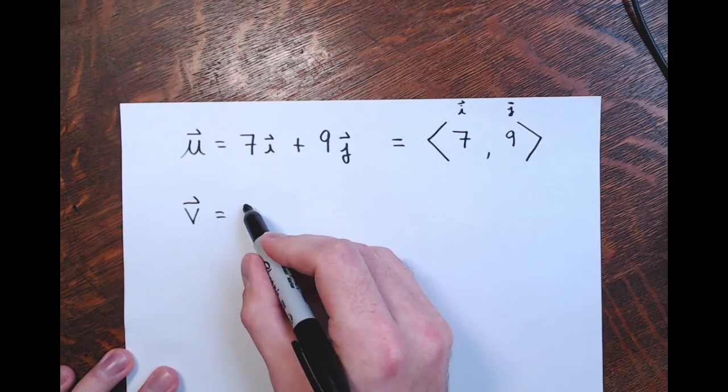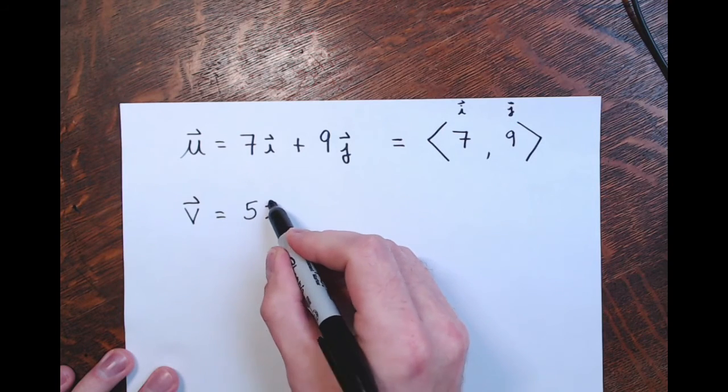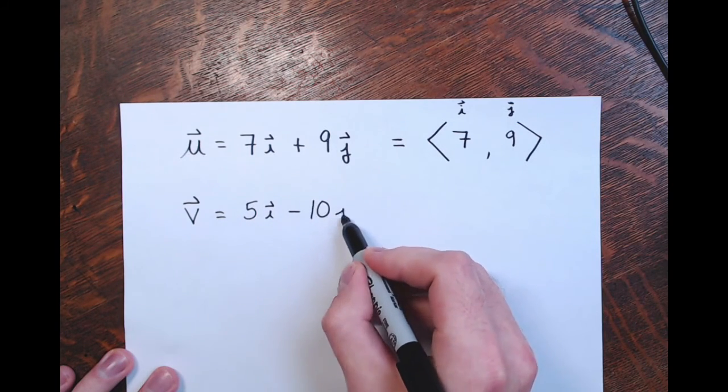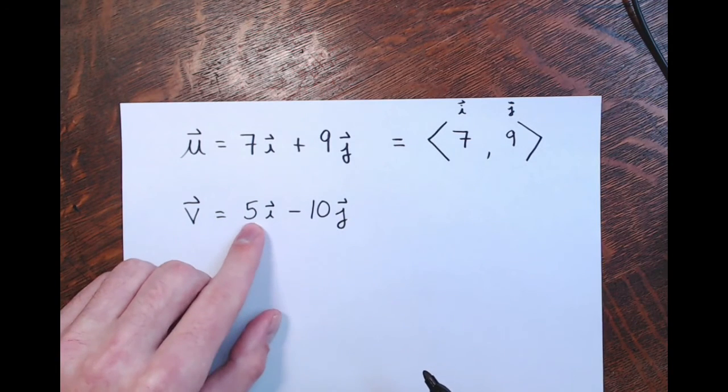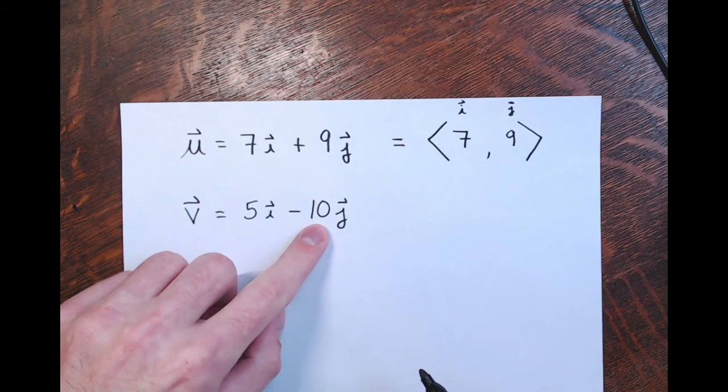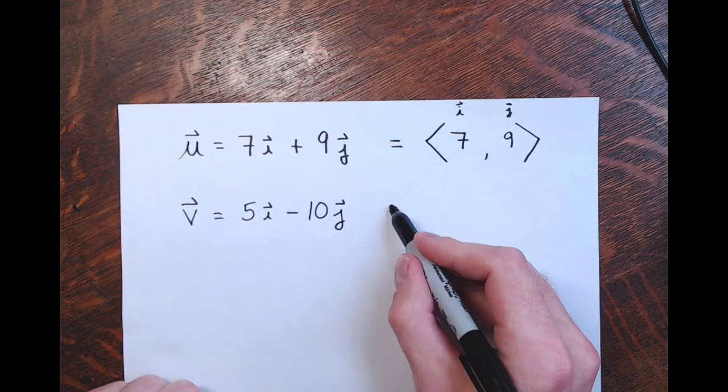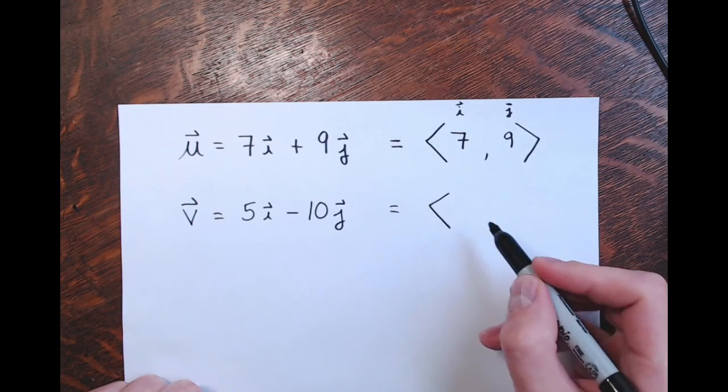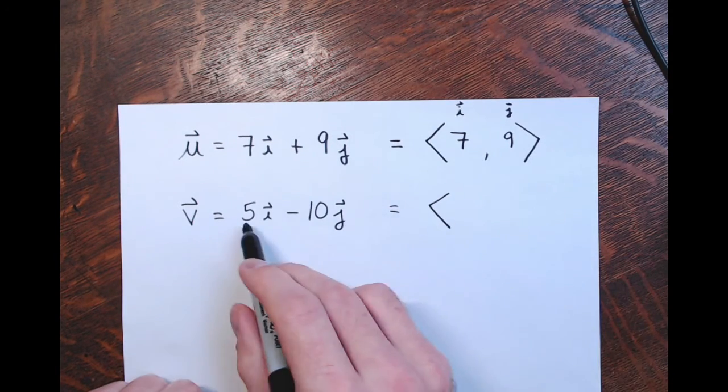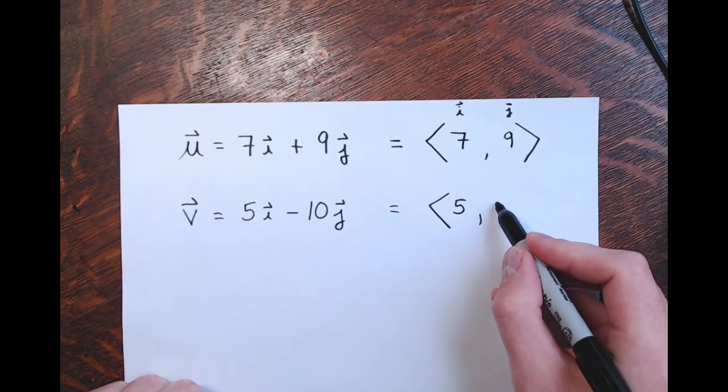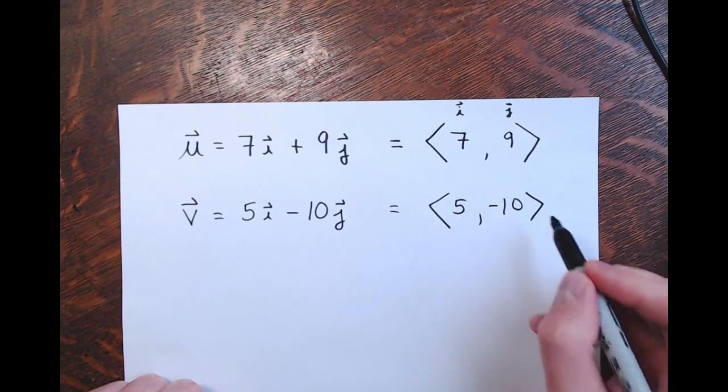Vector v is given to us as 5 times vector i minus 10 times j. This would just mean right 5, down 10. So in that standard position vector notation, the wedge notation, I'd have 5 for the first component, negative 10 for the second component.